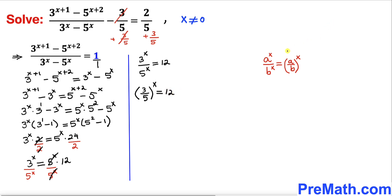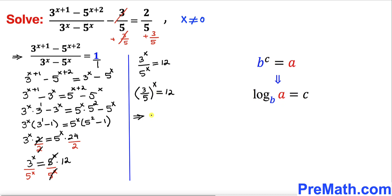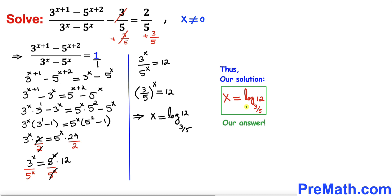Now let's recall the conversion rule from exponential form to logarithmic form. We can write x = log base (3/5) of 12. So our solution turns out to be x = log_(3/5)(12), or in terms of decimals, x ≈ -4.864. Thanks for watching and please don't forget to subscribe to my channel for more exciting videos. Bye!